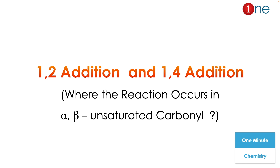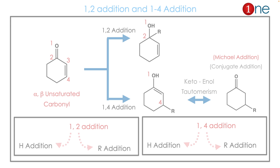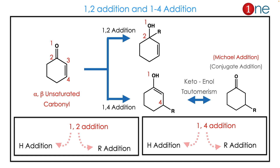Welcome to One Minute Chemistry. In this series we will see some quick concepts. Here we are going to see 1,2-addition and 1,4-addition — basically we are finding where the reaction occurs in alpha-beta unsaturated compounds. First, let us see what is 1,2-addition and 1,4-addition, which is a very common addition in organic reactions.